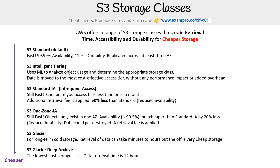All of these storage classes live in the same Amazon S3 console. S3 Glacier is basically like its own service, but it's part of S3, so it kind of lives in a weird state. There's one not on this list: S3 Outposts. It has its own storage class and doesn't fit neatly into this linear cost progression.